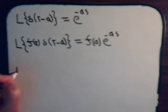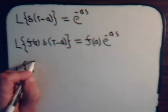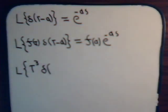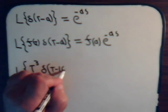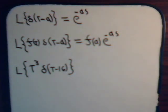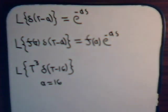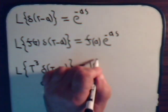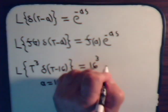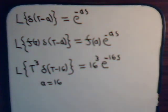Let's consider this problem. Suppose we have the Laplace transform of t cubed times the Dirac delta function of t minus 16. In this problem, a equals 16, so it will equal f(a), where f is t cubed and a is 16, so that equals 16 cubed times e to the minus 16s. That's all there is to it.